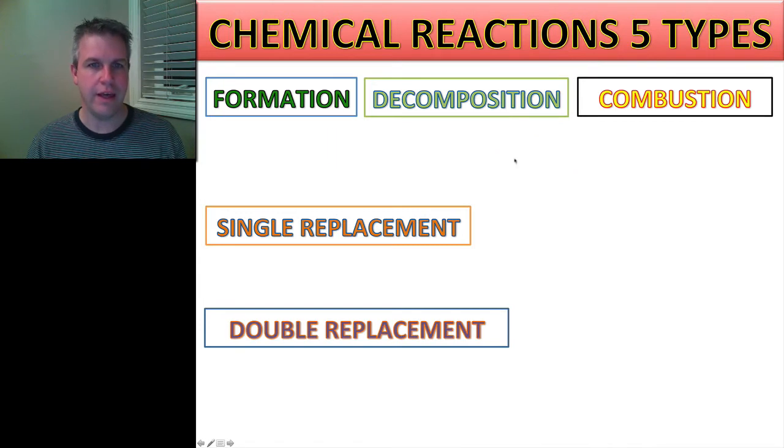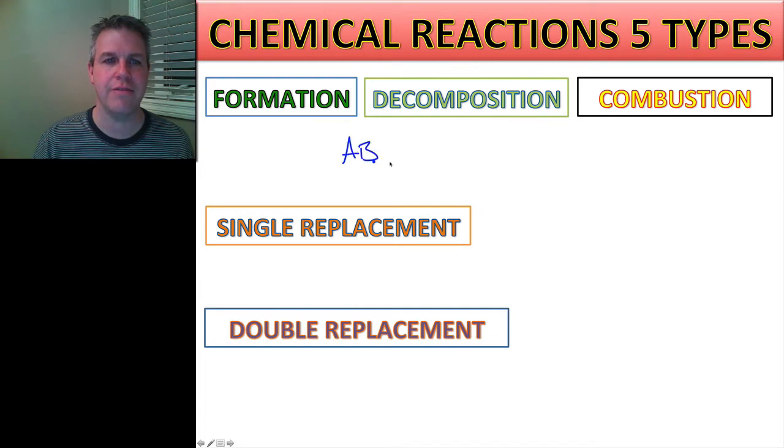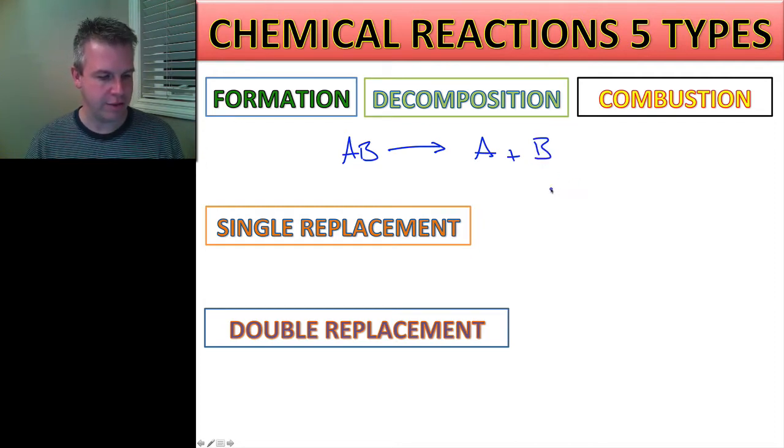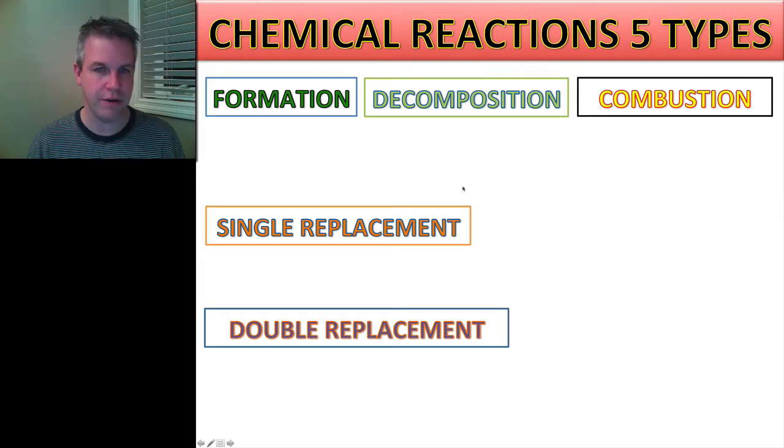Decomposition - well, decomposition is the exact opposite of that. So if I have a compound and I want to break that down, I'm going to have this compound going to yield the two elements that make up that compound. So example that I would use here would be something like carbon dioxide. Carbon dioxide broken down into its components is going to give me carbon and oxygen.